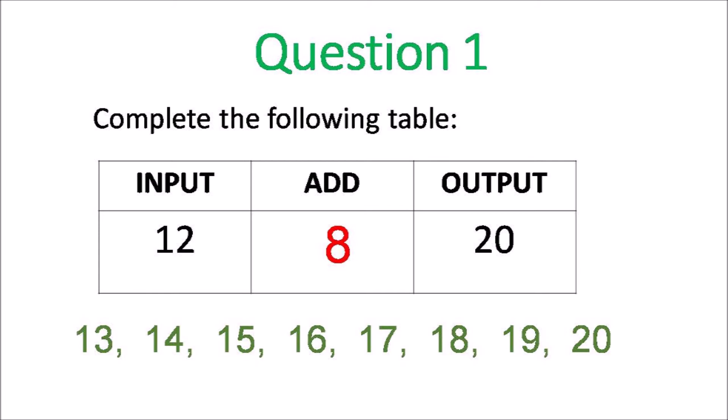Yeah, you could have counted on from 12 to 20, so you count 13, 14, 15, 16, 17, 18, 19, 20. That's eight fingers, eight numbers, so the answer is 8.